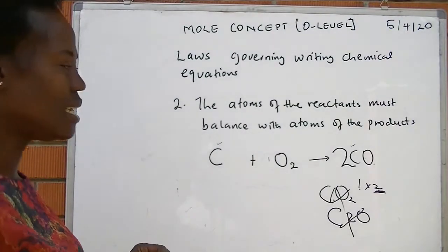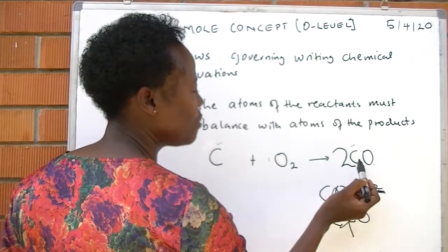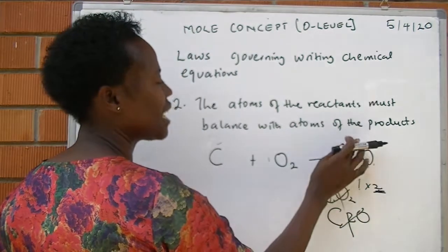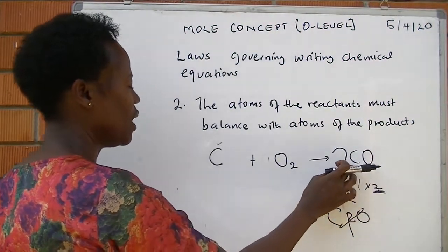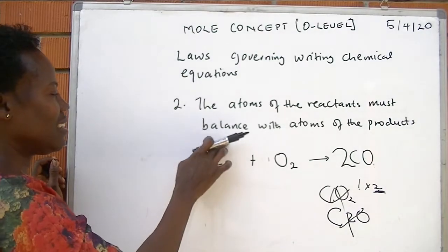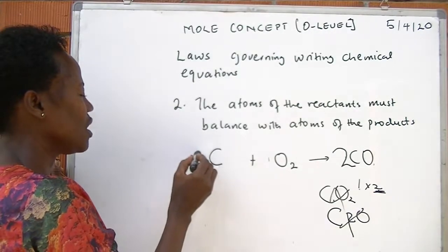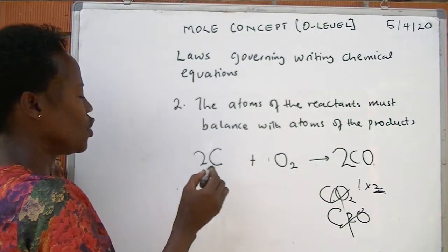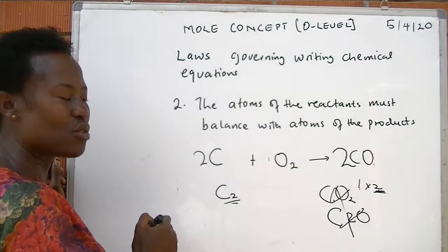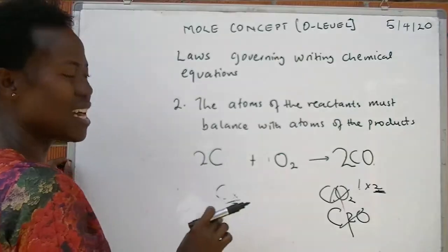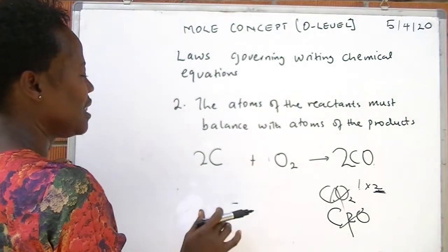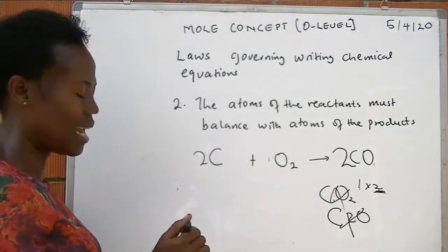Placing a two in front of carbon monoxide means two times carbon and two times oxygen. This changes the carbon count to two, so we must come back to the reactant side to balance it — we introduce a two in front of carbon there as well. Do not put it as a subscript, which would mean a carbide. We want two moles of carbon, and therefore this equation is now balanced.